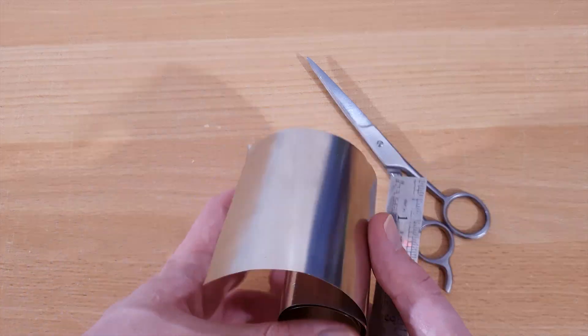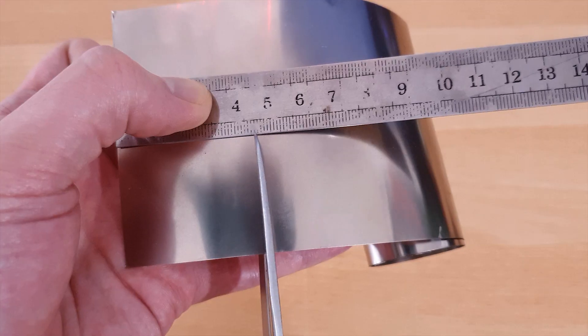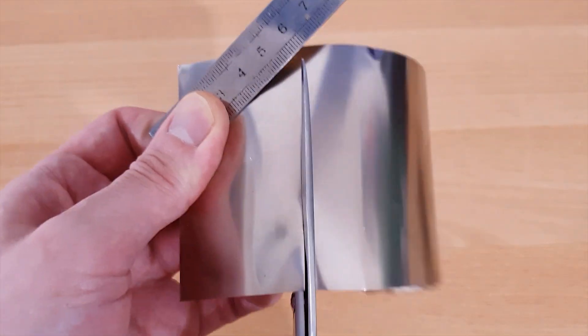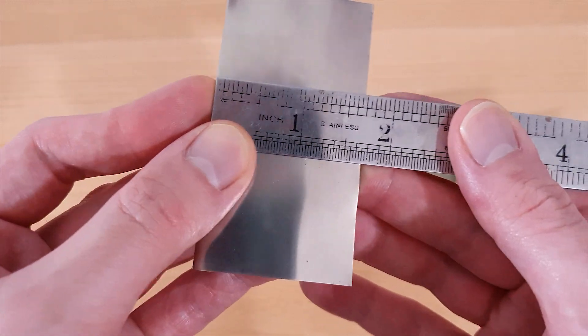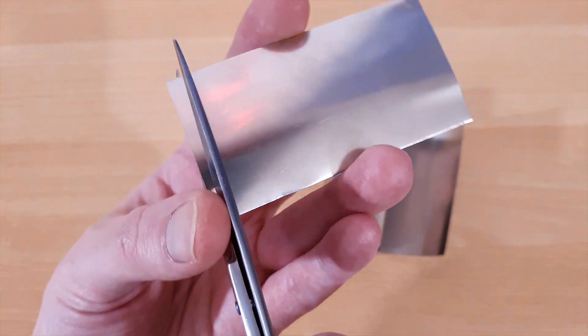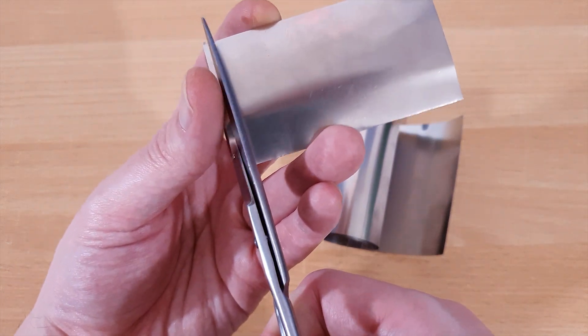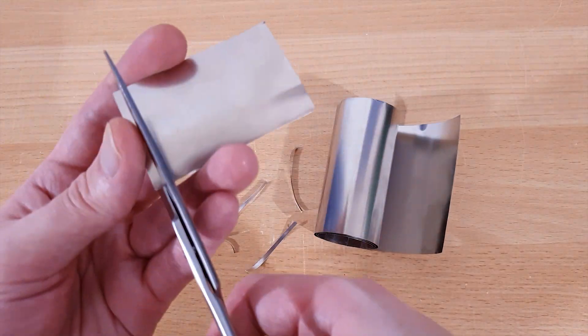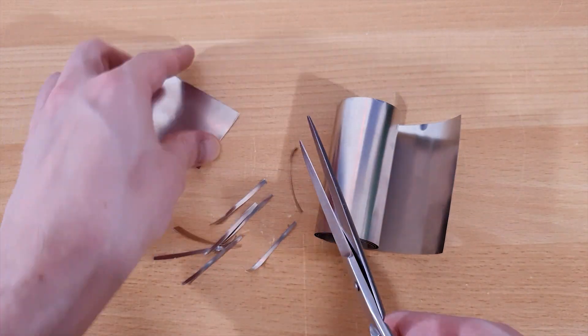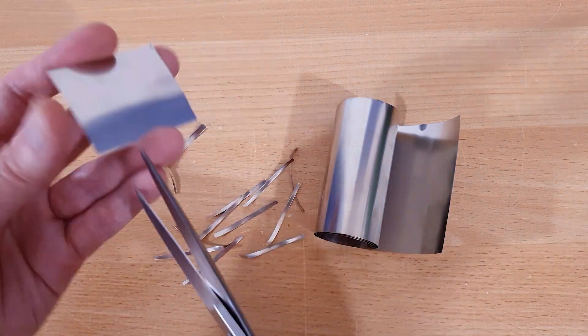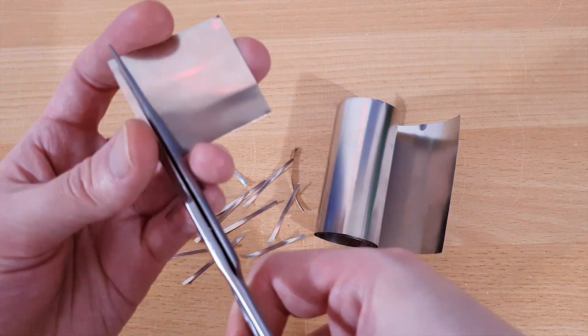First you cut some nickel strips from some nickel sheet, about 43 millimeters long and two millimeters wide. It doesn't have to be accurate. This is 0.1 millimeter thickness nickel sheet which you can cut easily with a sharp pair of scissors. This part just takes a few minutes.